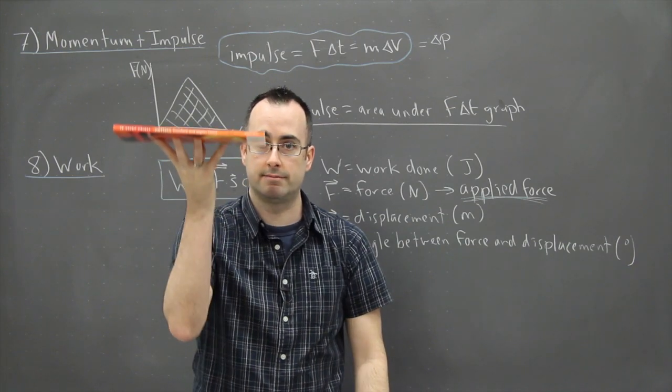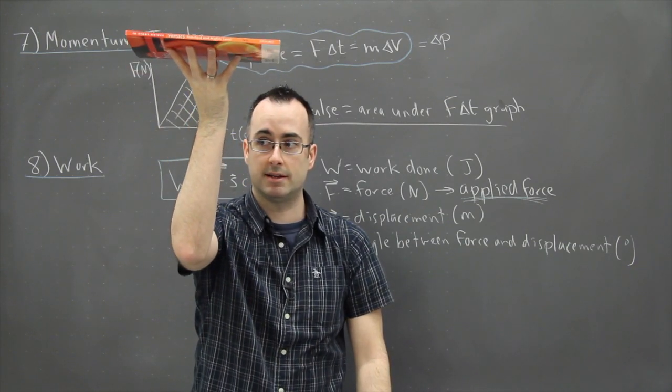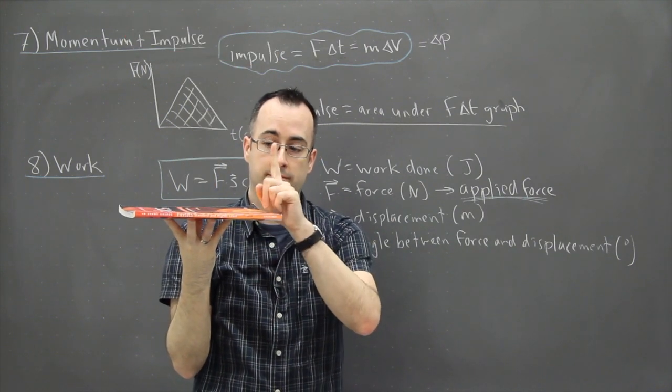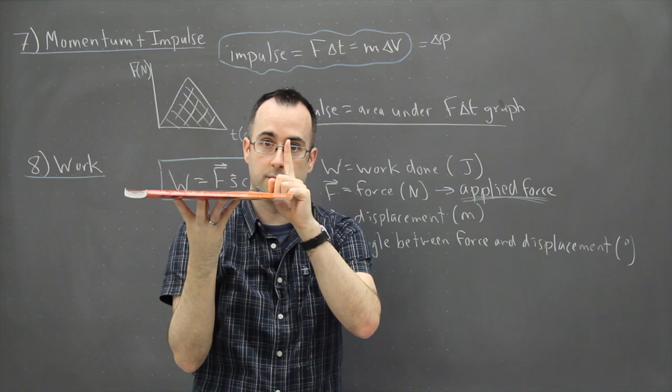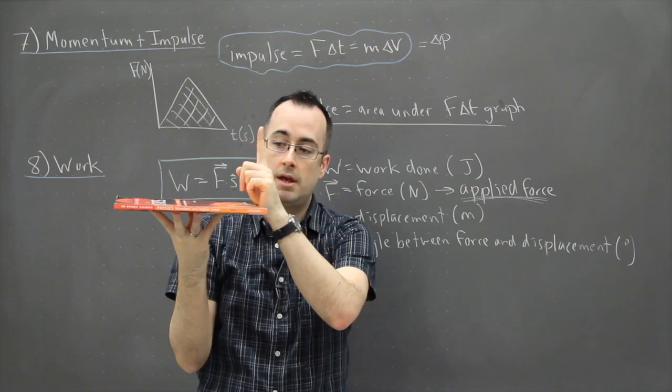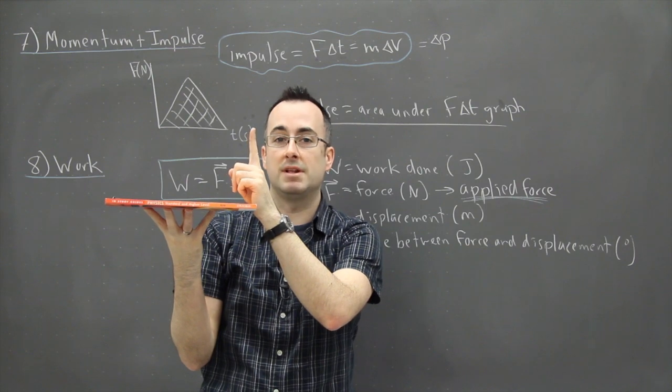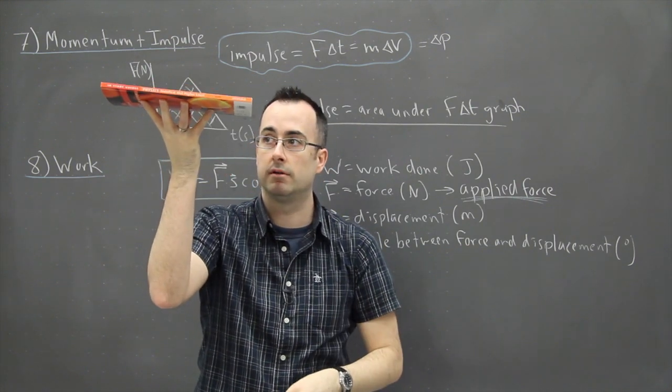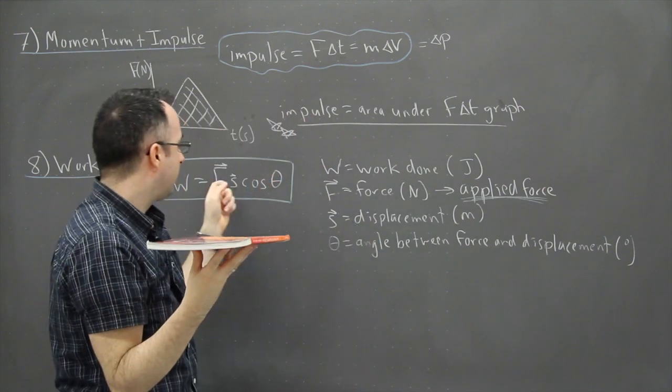Now if I raise it like this, what happened there? I had an applied force that was upwards still. I'm still holding the book, so I still have an upwards applied force. But then I had a displacement that was upwards. So if I did that I have a positive work. In other words I could just multiply F times S.